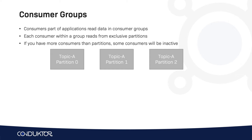Let's say we create a consumer group called consumer group application one — that could be whatever application is reading from a Kafka topic — and we create two consumers as part of that consumer group. These two consumers share the reading from the three topic partitions. Consumer one reads from partition zero and one, and consumer two reads from partition two.